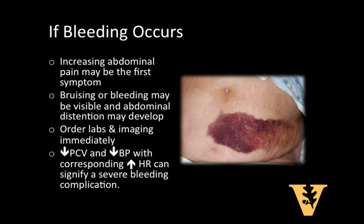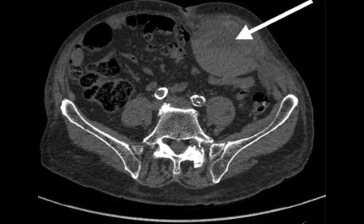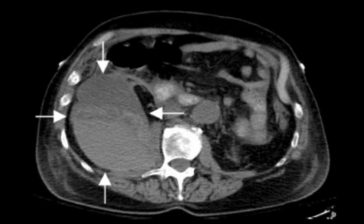Bleeding from an artery or vein impaled by the needle can be severe and potentially fatal. The patient may complain of increasing abdominal pain as the first symptom. Bruising or bleeding may be easily visible and abdominal distension may develop as signs of an intra-abdominal bleed. Imaging and labs should be ordered immediately if this complication is suspected. A drop in PCV, a drop in blood pressure with corresponding elevation in heart rate are also signs of a severe bleeding complication. Abdominal CT images can reveal a rectus sheath hematoma or intra-abdominal hemorrhage.